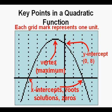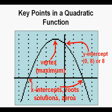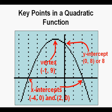We can evaluate the points on a graph to find out what they are. There is no scale given here, but each grid mark along both the x-axis and y-axis represents one unit. This y-intercept at the point (0,8) we can just call a y-intercept of 8. The coordinates of the vertex or maximum are (-1, 9). The coordinates of the x-intercepts are (-4, 0) and (2, 0), and we can also say the values of the x-intercepts are -4 and 2.